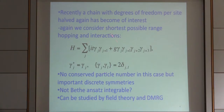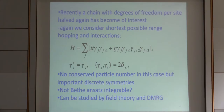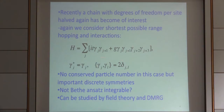We can cut in half the number of degrees of freedom again. Instead of having one spinless fermion per lattice site, we can have half a spinless fermion per lattice site in a certain sense — we can introduce so-called Majorana fermions. These are fermionic operators that equal their own Hermitian conjugates. We can combine two Majorana fermions to make a Dirac fermion. To get a non-trivial interaction, we actually have to write something on four neighboring lattice sites, which is the shortest-range possible interaction for Majorana fermions in one dimension — a four-Fermi interaction.